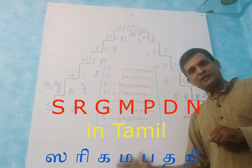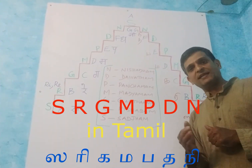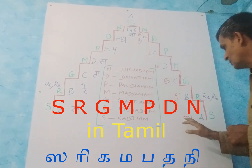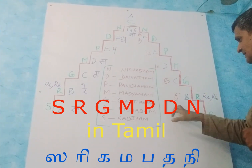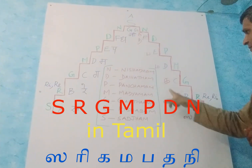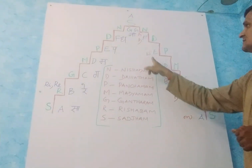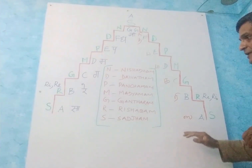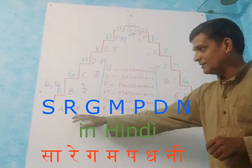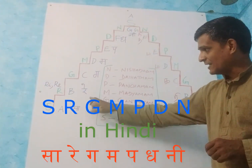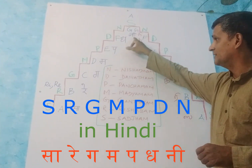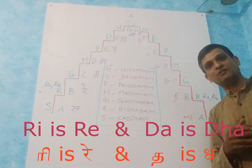In Carnatic classical, it is called Sa Re Ga Ma Pa Da Ni. I have written in Tamil to show Sa Ri Ga Ma Pa Da Ni. This is the notation for the seven notes. But in Hindustani classical, the same Sa Re Ga Ma Pa Da Ni is called Sa, Re, Ga, Ma, Pa, Da, Ni — only the pronunciation differs.